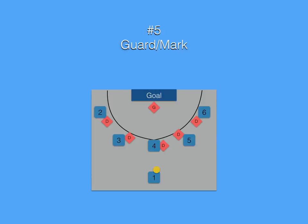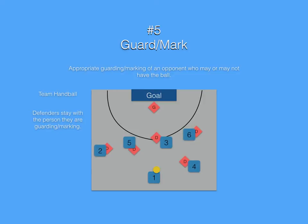Our fifth game component is guarding and marking. This is the appropriate guarding or marking of an opponent who may or may not have the ball. Defenders stay with the person they are guarding and marking — notice they don't leave the person they're supposed to guard or mark. The goal of guarding and marking is for the defenders to eliminate the space the offense wants to pass and shoot.